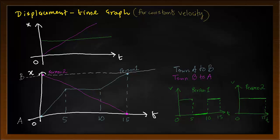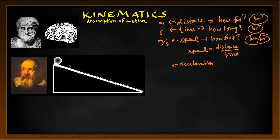There is an important rule to remember about displacement-time graphs: the gradient of a displacement-time graph is the velocity for that particular journey. So if you want to find the velocity for the five seconds of person 1's journey, find the gradient, which is the change in the y-axis divided by the change in the x-axis. It is also important to remember that force — a push or a pull — does not cause motion. Energy causes motion. Force causes change in motion, also known as acceleration.